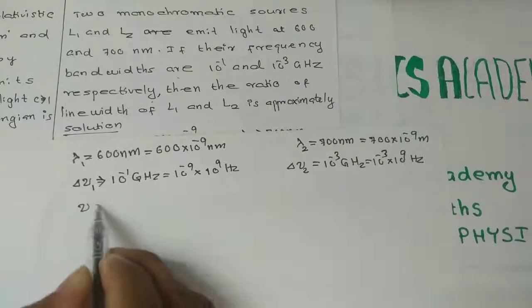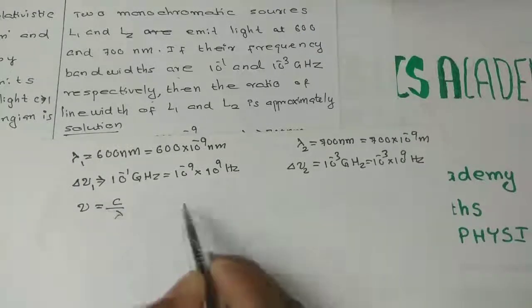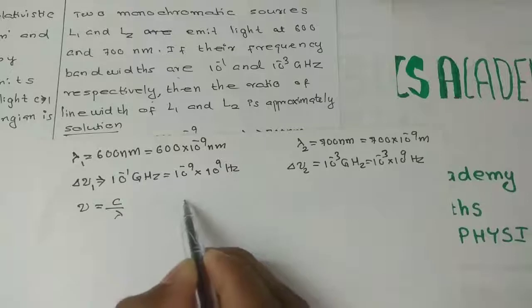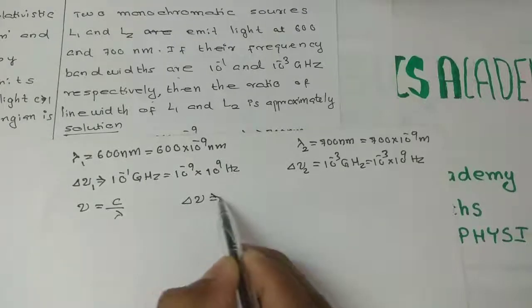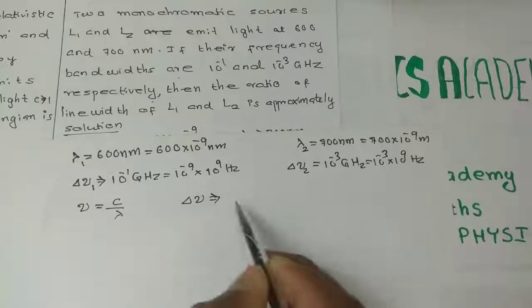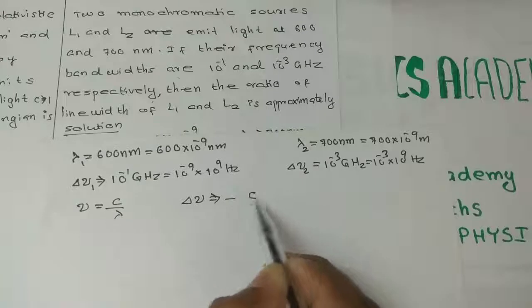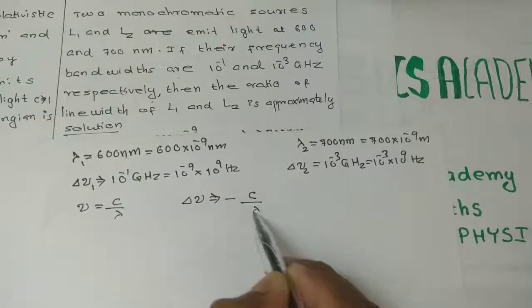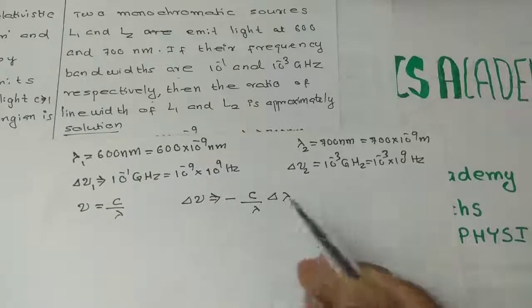We use the formula nu equals c divided by lambda. Differentiating, we get delta-nu equals minus c divided by lambda squared times delta-lambda. This gives us the relationship between frequency bandwidth and line width.